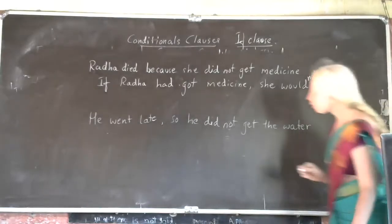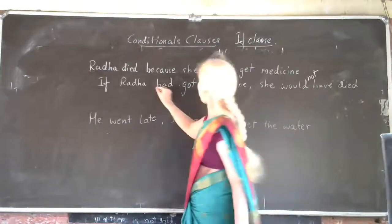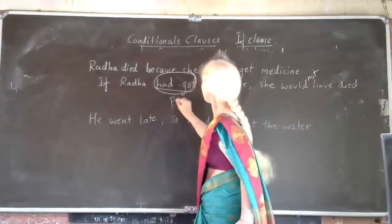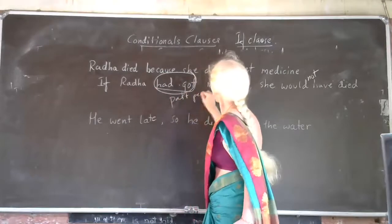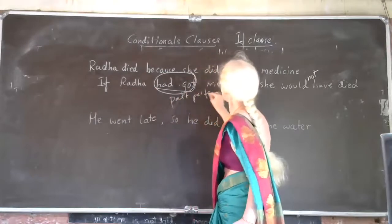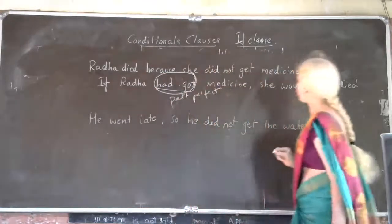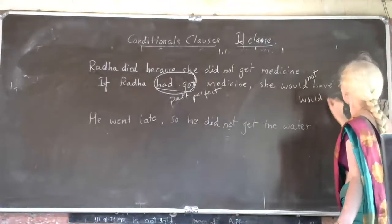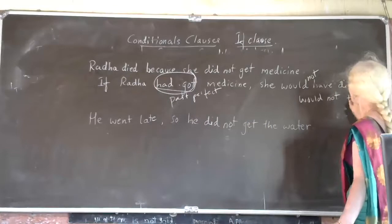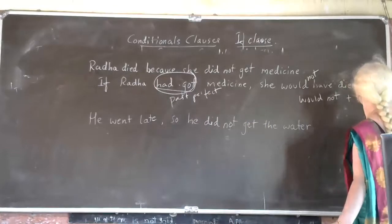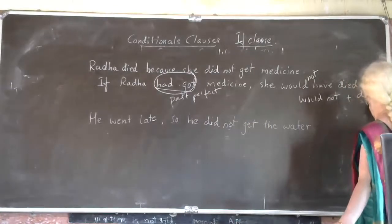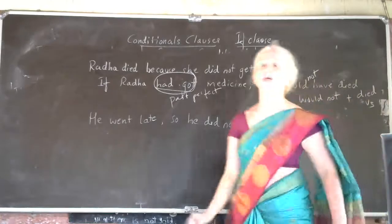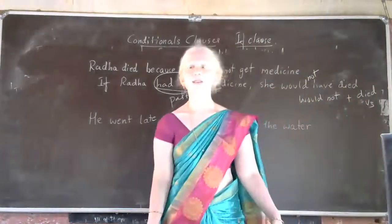See here. Had got — in your if-clause, you have past perfect tense. And in the main clause, you have 'would not' plus 'died' — that is your past participle, V3. Any doubt? The answer is correct now.